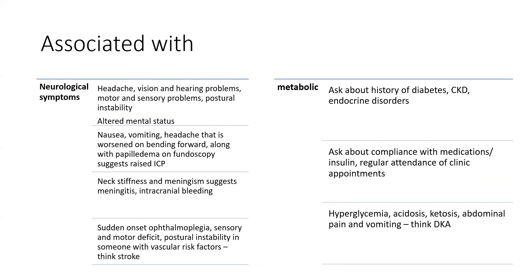Sometimes nausea and vomiting can be part of the syndromic features of neurological problems. Some of them can be serious causes like stroke, sinus infection, and brain tumor. Lesser issues, such as migraines and idiopathic intracranial hypertension, can also be responsible.